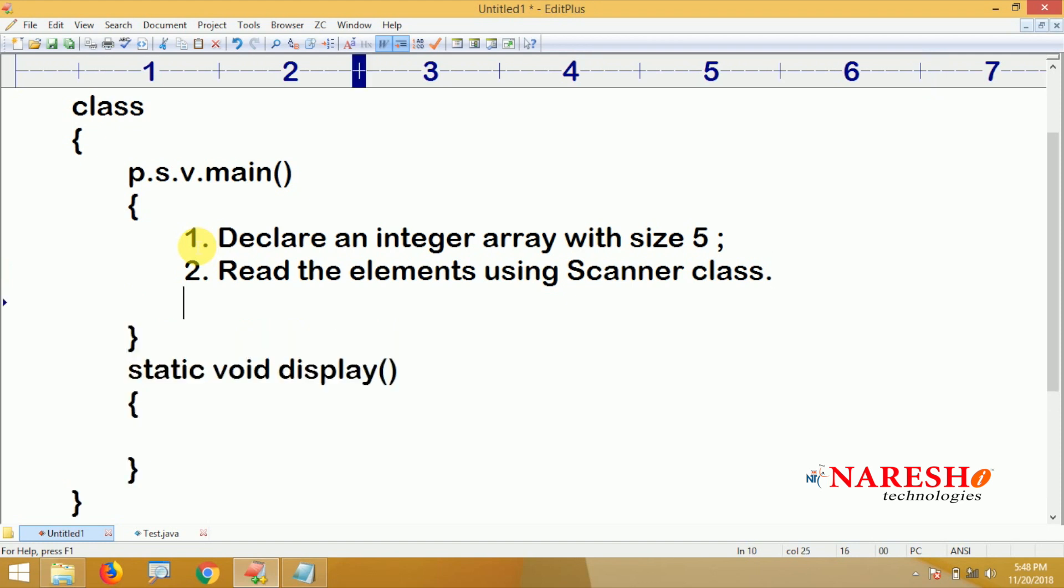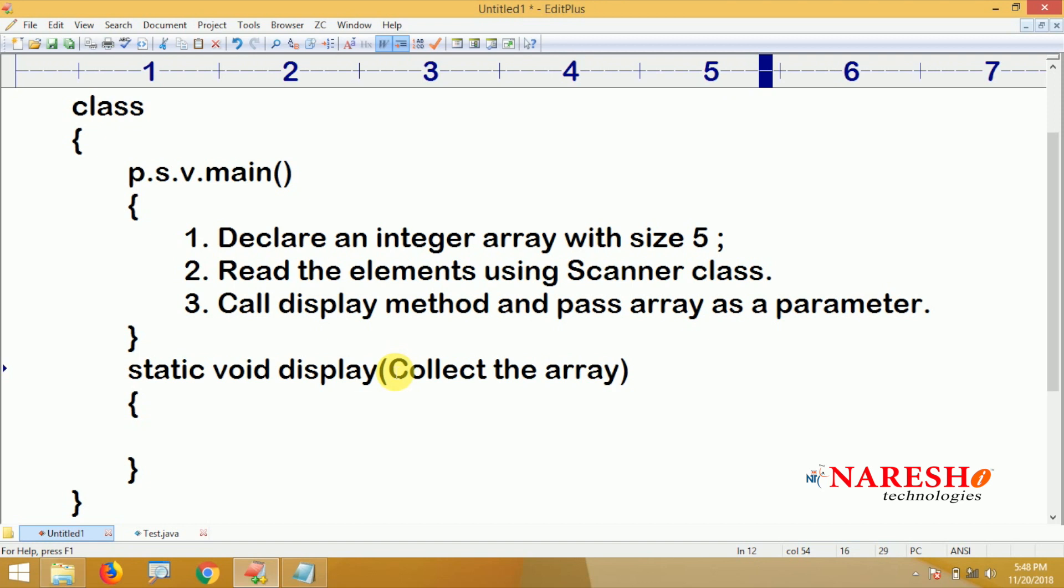And next, after reading the elements, call the display method and pass the array as a parameter. We need to pass - see, generally we know how to pass parameter values to arguments. With general variables we are passing. Here it is different - we are passing an array as a parameter. So we should collect that array here by declaring an array type argument. Here we need to declare an array type variable - that is called an argument.